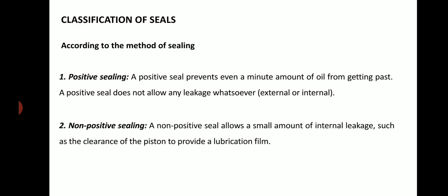Classification of seals. According to the method of sealing: Positive sealing — a positive seal prevents even a minute amount of oil from getting past. A positive seal does not allow any leakage whatsoever, external or internal. Non-positive sealing — a non-positive seal allows a small amount of internal leakage, such as the clearance of the piston, to provide a lubrication film.